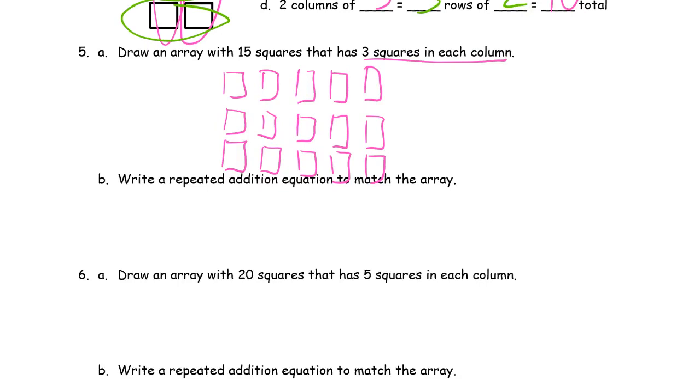Now write a repeated addition equation to match the array. Well, we're counting columns here, so I'm going to go with columns. There's 3 in each column, so I'm going to go with 3s. So that's 1, 2, how many columns do I have? I have 5, so that's 3. I need 5 3s. And we know it equals 15 squares because it told us right in the very beginning.